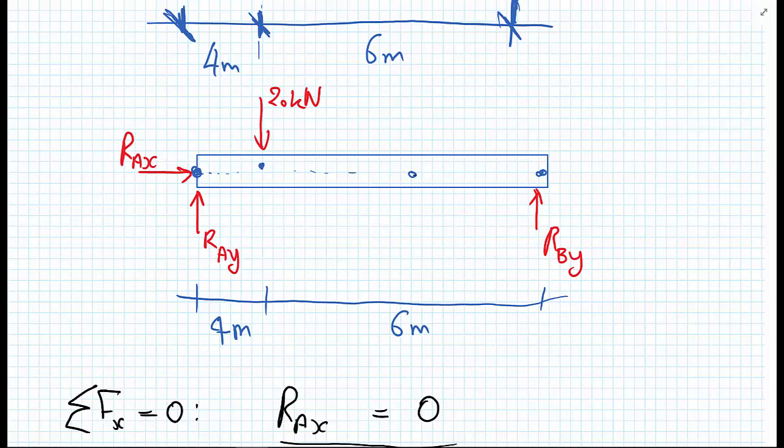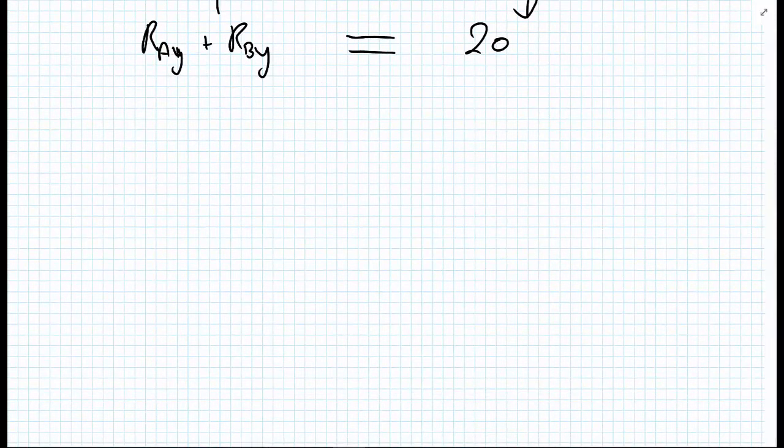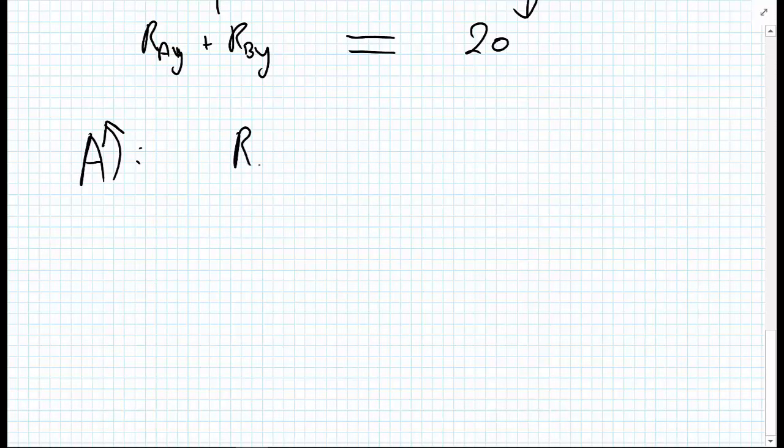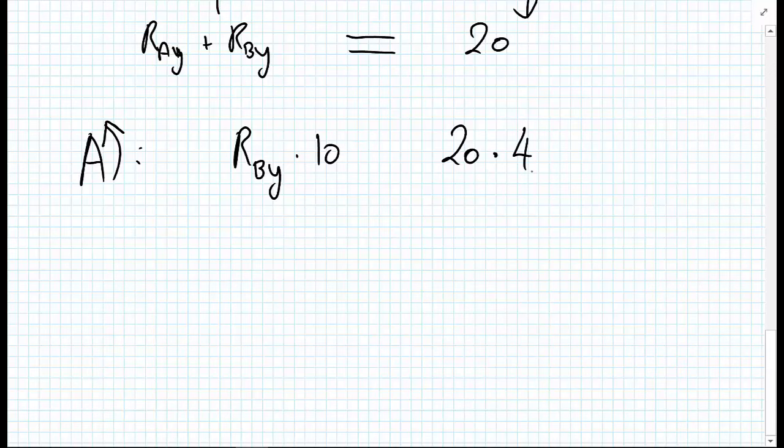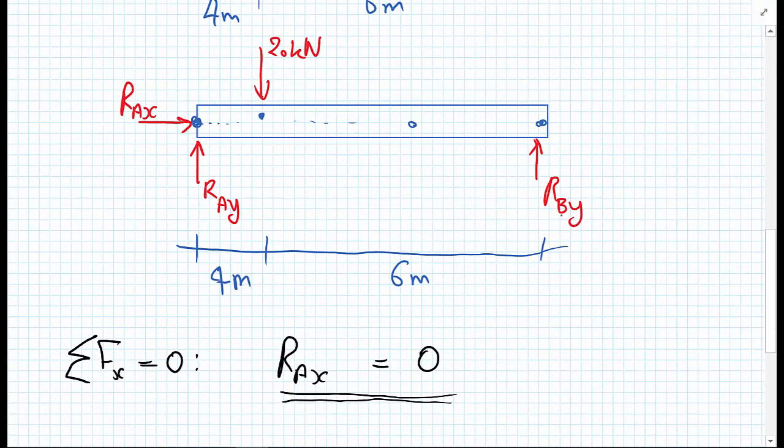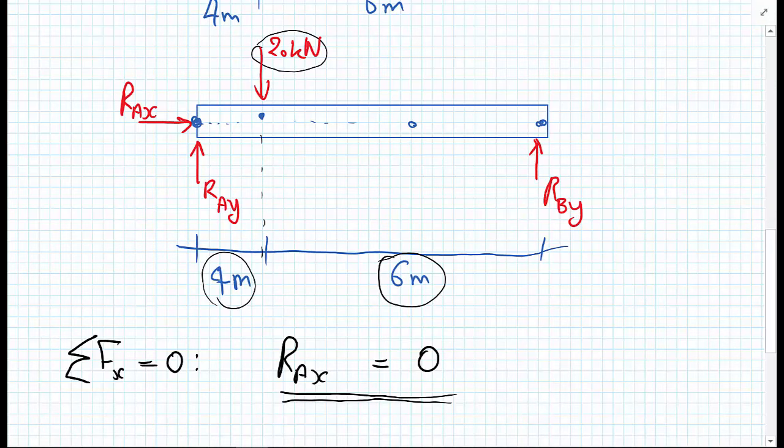So taking moments about point A. This is how I like to denote it on my calculation sheets. So taking moments about point A, I have the force R B Y right at the far end. And the perpendicular distance from A to B is 10 meters. And I also have my 20 kilonewtons, and that is 4 meters away from point A. So the distance R B Y from A is the 4 meters, 6 meters, which is 10 meters. And the lever arm for the 20 kilonewton load is 4 meters from A.